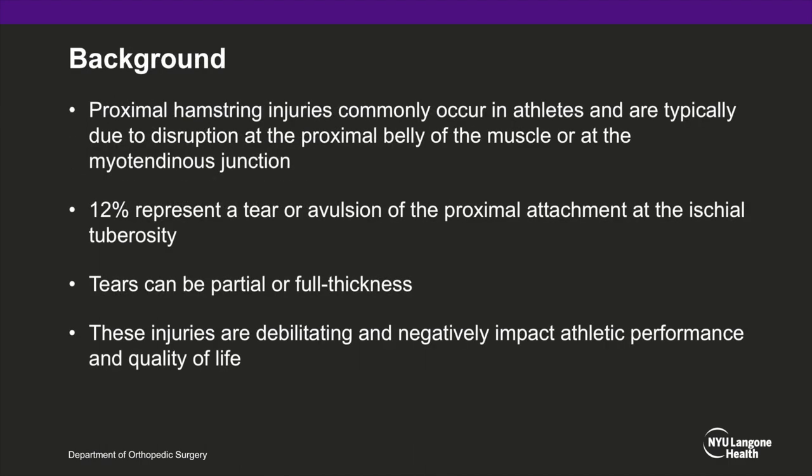Proximal hamstring injuries commonly occur in athletes and are typically due to disruption at the proximal belly of the muscle or at the myotendinous junction. 12% of these injuries represent a tear or avulsion of the proximal attachment at the ischial tuberosity. Tears can either be partial or full thickness, with partial tears comprising a significantly smaller portion of these injuries.